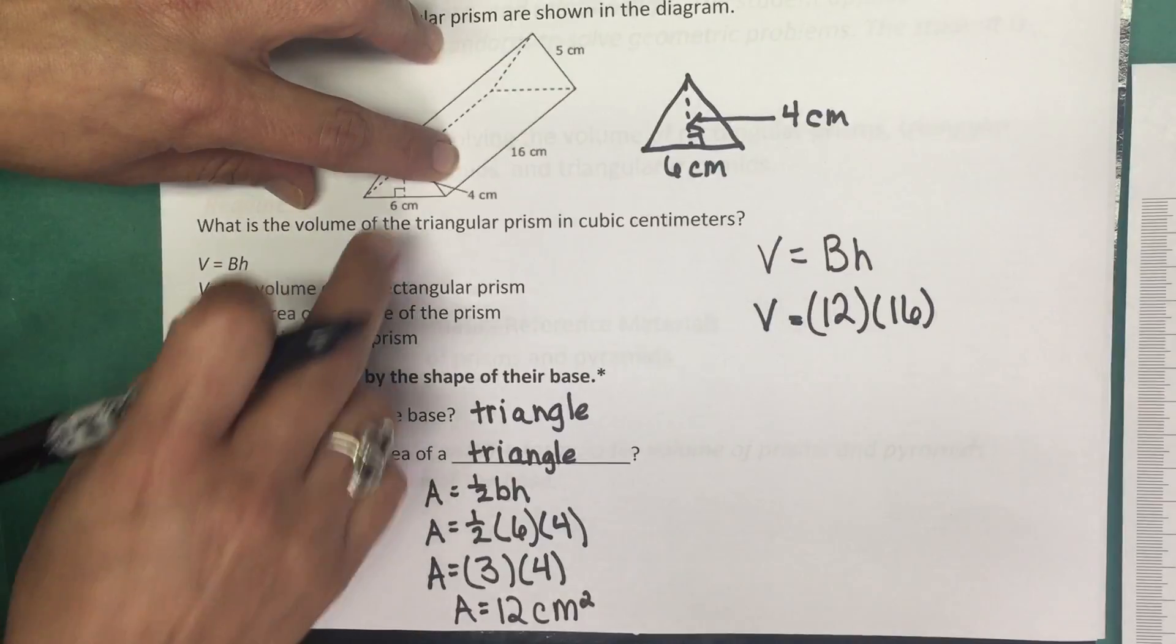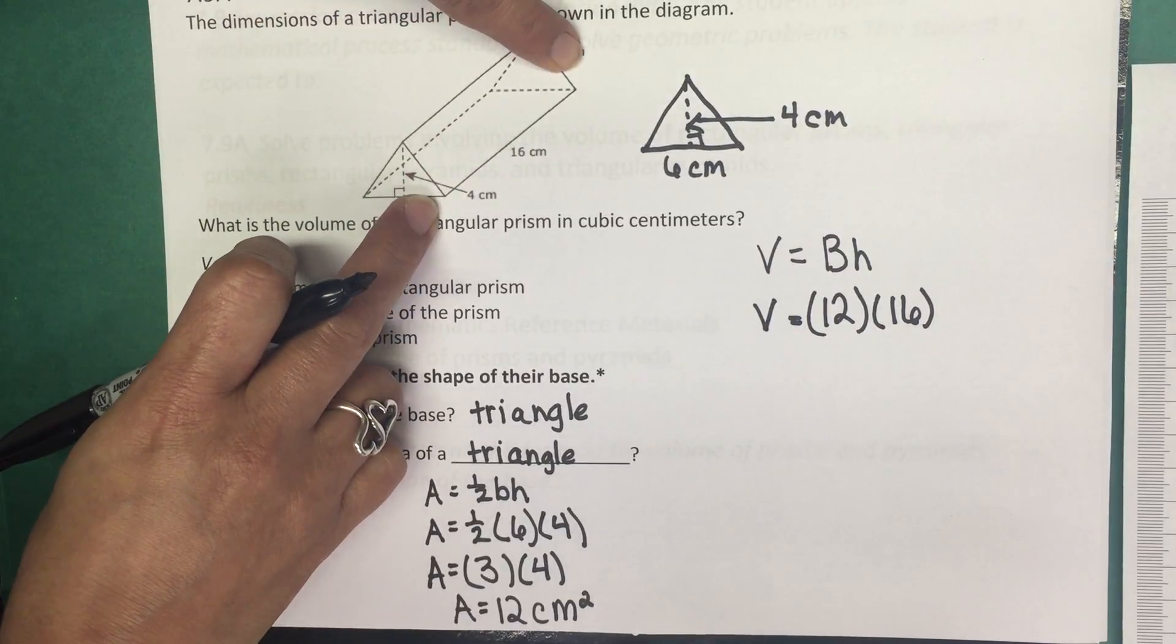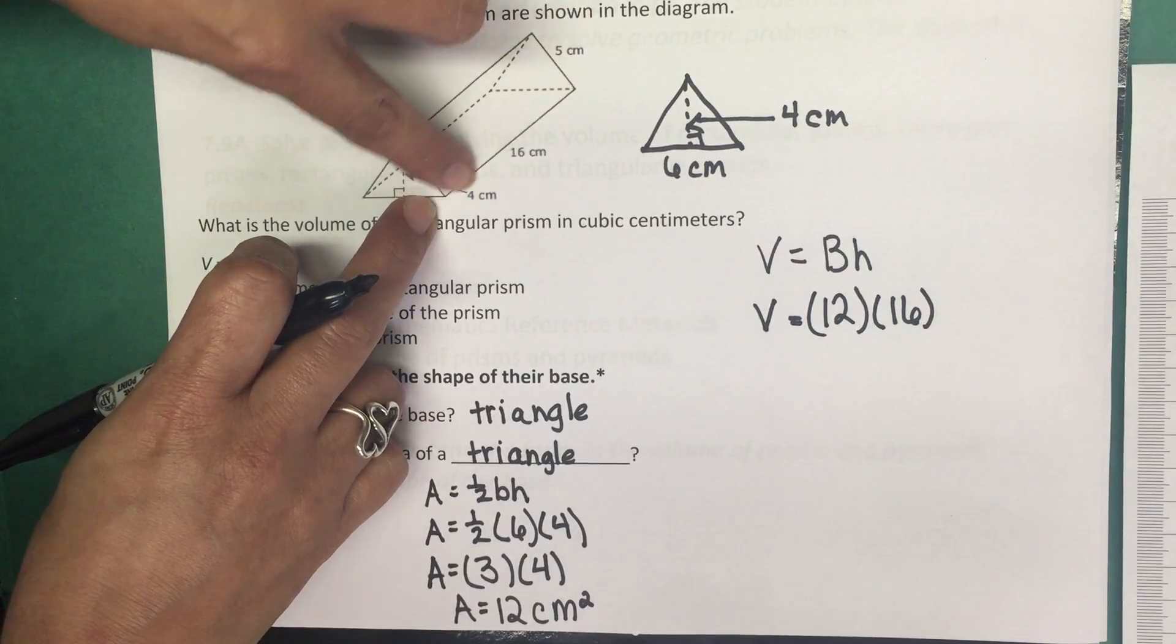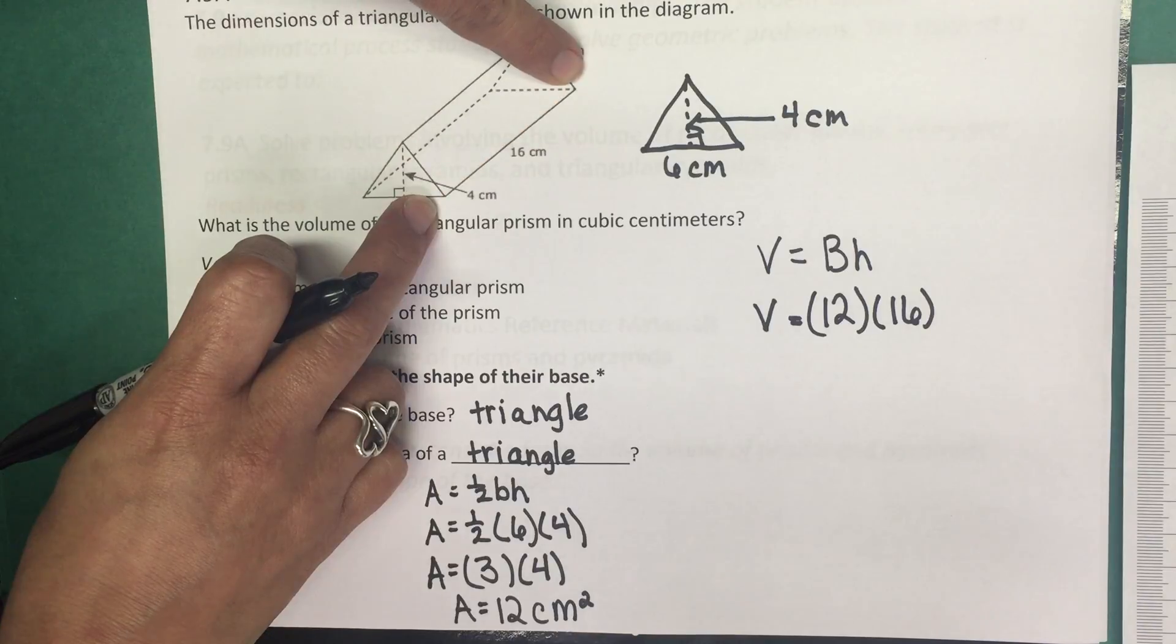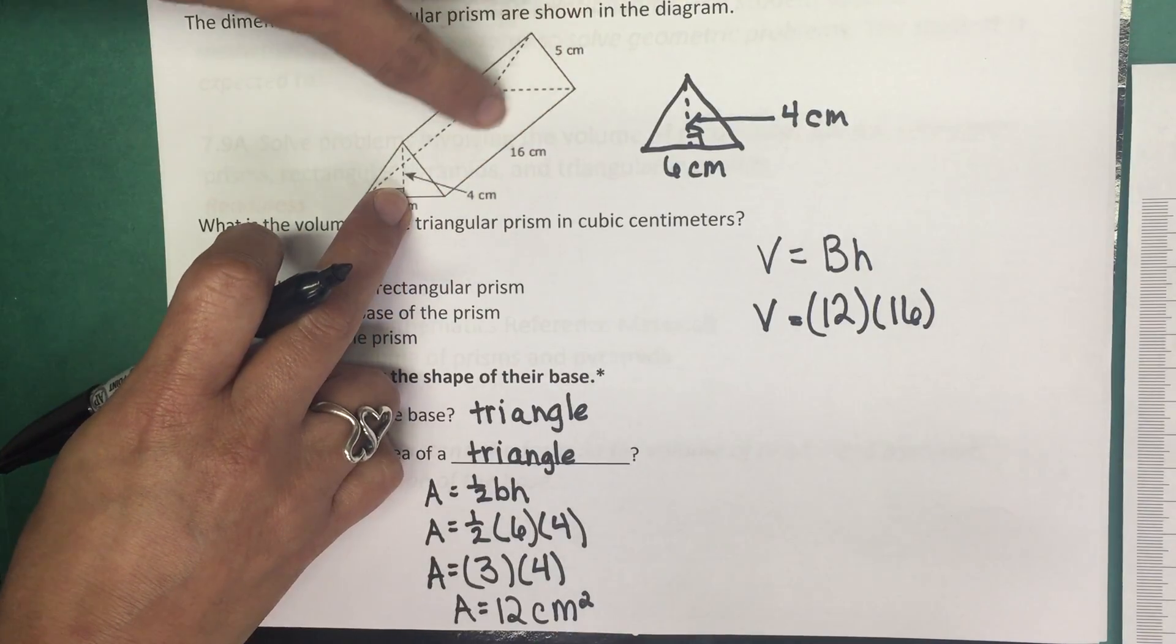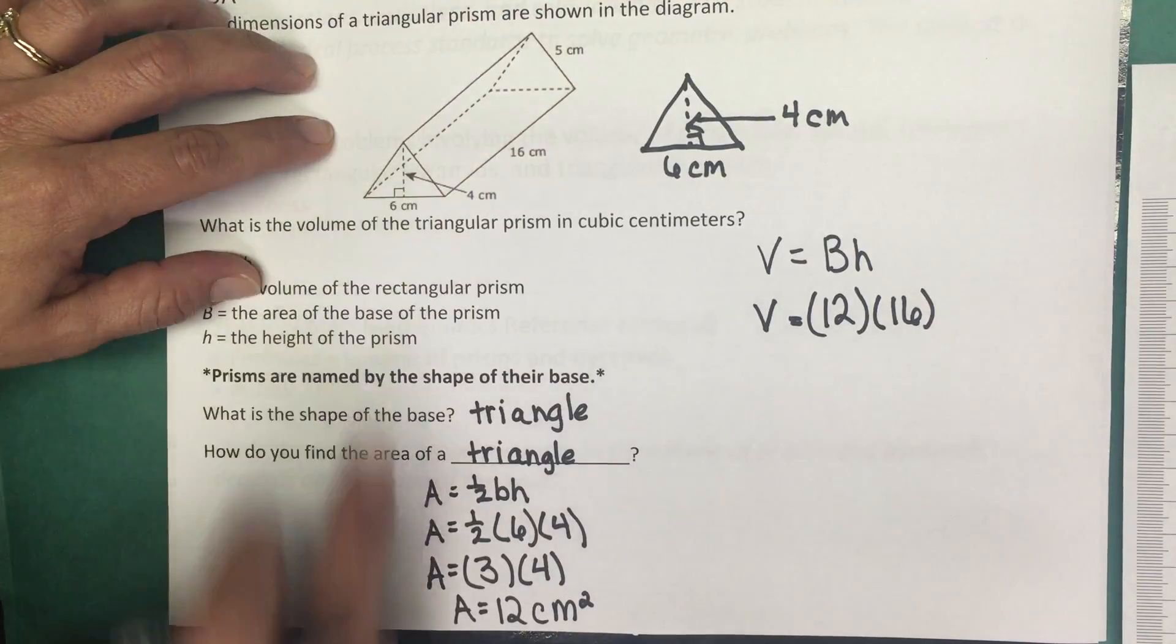Now the height is the perpendicular distance between the two bases. So right here we can see that this side is perpendicular to both of these triangles. So therefore that is the height of the prism.